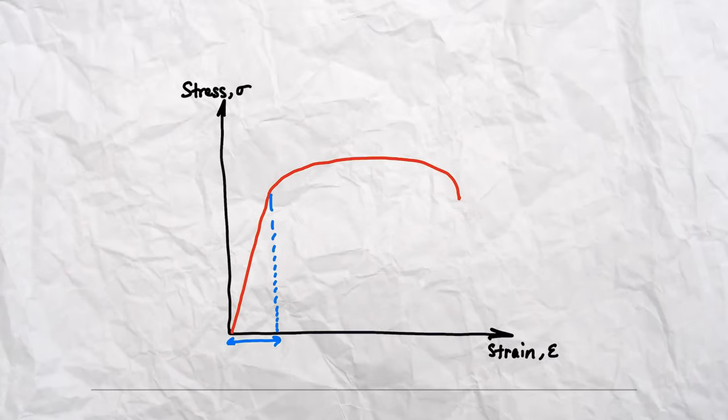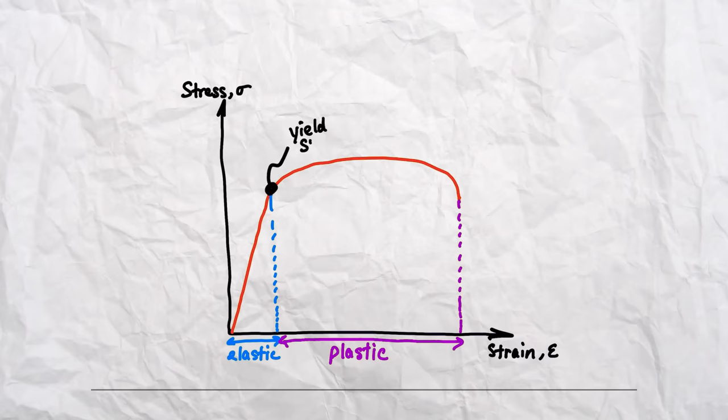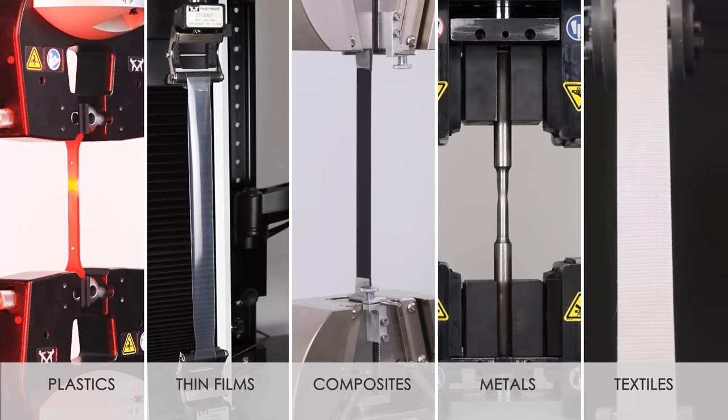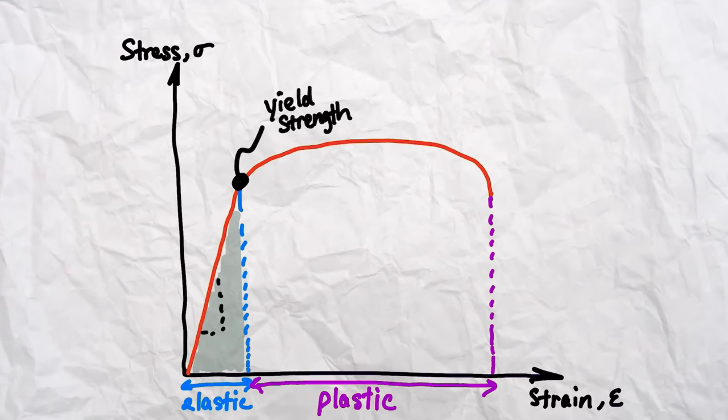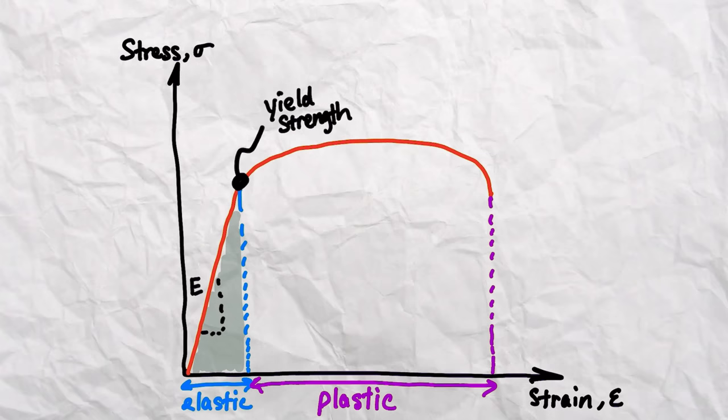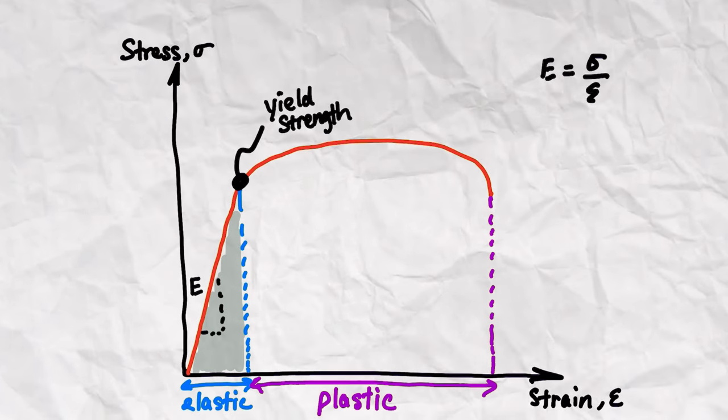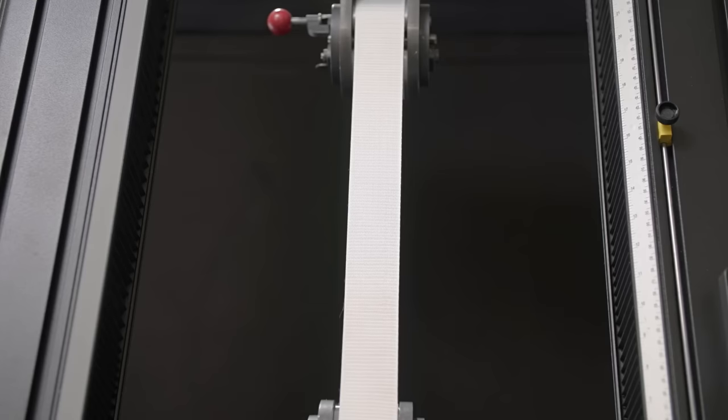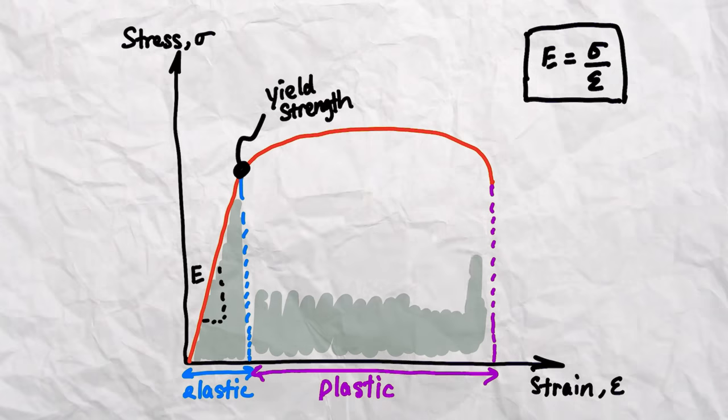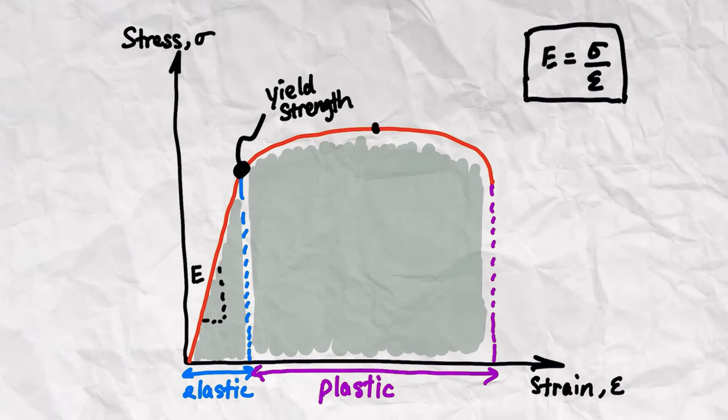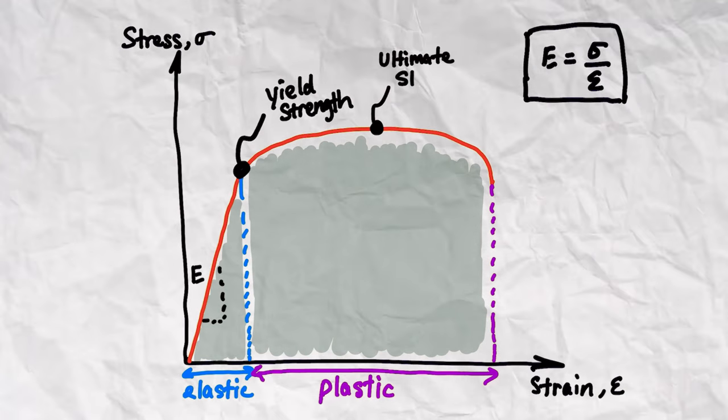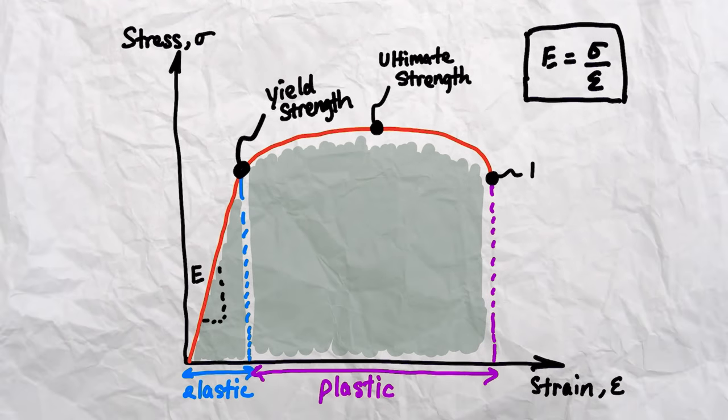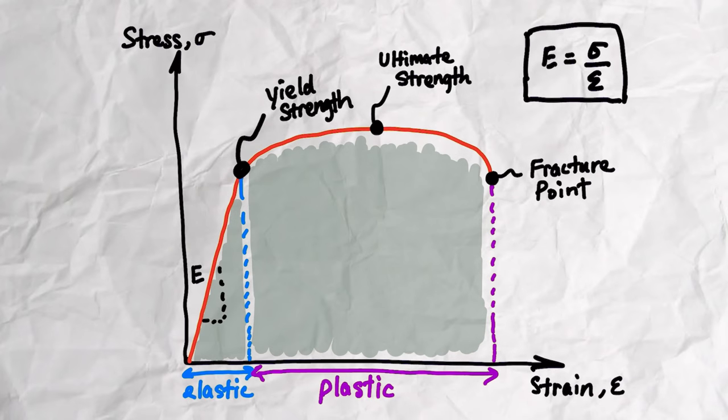The curve can be split into the elastic and plastic region at the yield point or yield strength. If I apply a stress that's below the material's yield strength, it will return to its original shape and stay within this linear region. The slope of this line is the Young's or elastic modulus, represented by E, and is the ratio of stress to strain within the elastic region. The higher the value, the more stiff a material is. Any stress exceeding the yield strength will cause the material to permanently deform, which is this non-linear area known as the plastic region. The peak of this curve represents the ultimate strength of the material, which is the max stress a material can handle right before breaking. Finally, this point is called the fracture point, which is the stress at which the material breaks.